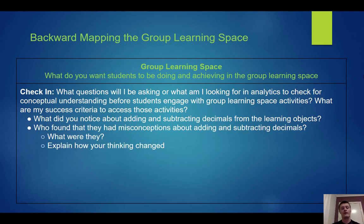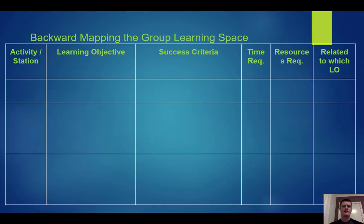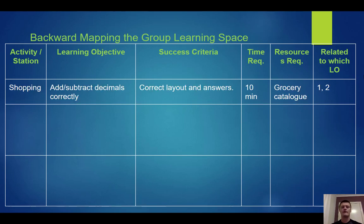We'll be asking students what they noticed about adding and subtracting decimals from the learning objects, talking about student misconceptions and how their thinking has changed, and getting students to explain their process for adding and subtracting decimals and how to check if it's correct. The next section maps out the actual activities for the group learning space — these should be active learning activities where students are applying, analyzing, evaluating, or creating. For this example the activities are real world, including a shopping activity focusing on correct layout and calculation, as well as mental calculation conversation. On the right hand side I've mapped activities back to particular learning objects to make sure I cover everything.